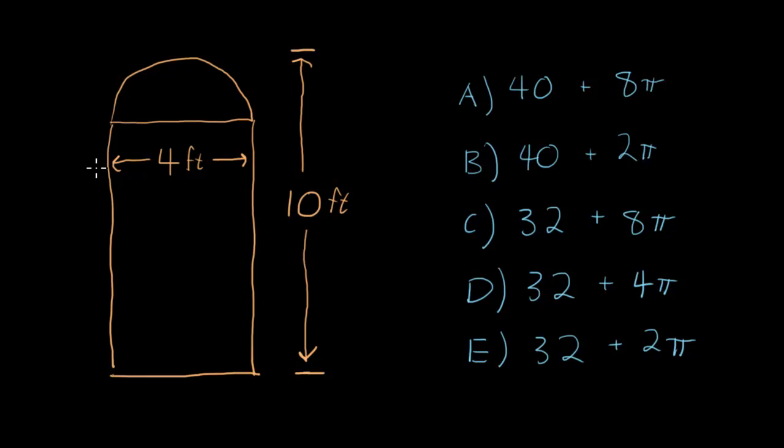So we need the area of this window, which is a rectangle and a semicircle. But if we're estimating about what the answer might be, we might imagine what would be the case if it was just a less complicated window. What would be the case if it was just a rectangle, just a 4 by 10 rectangle? Well then the area would just be 4 times 10 or 40, right?